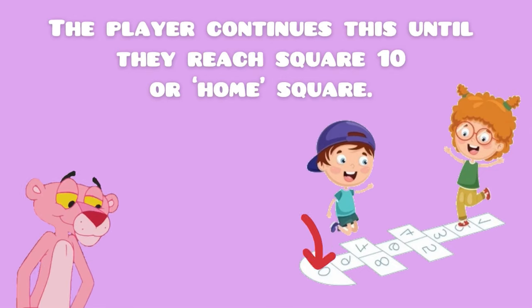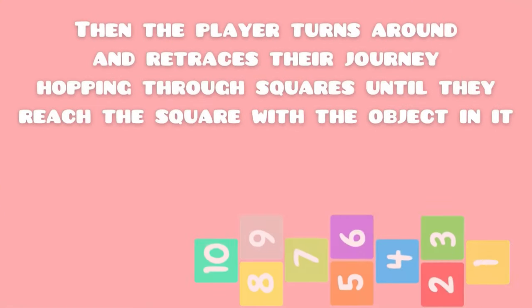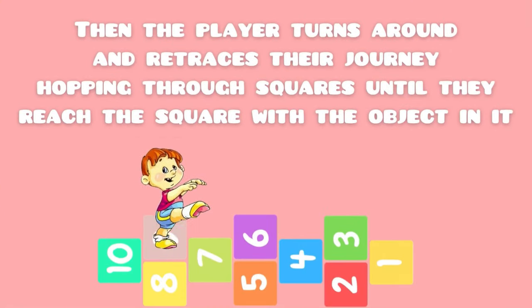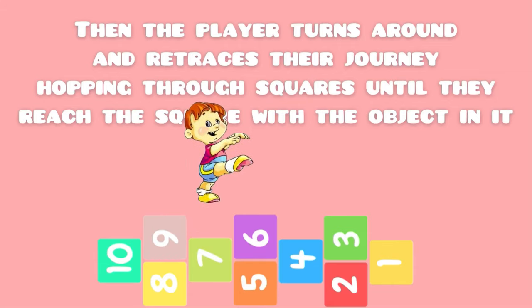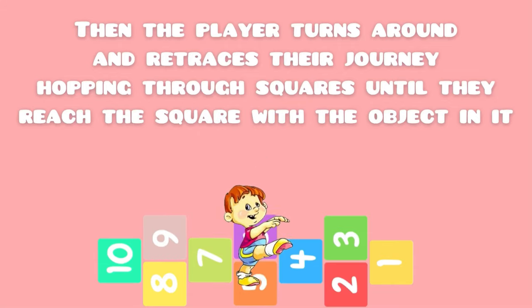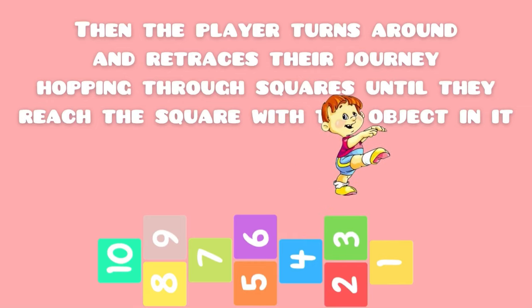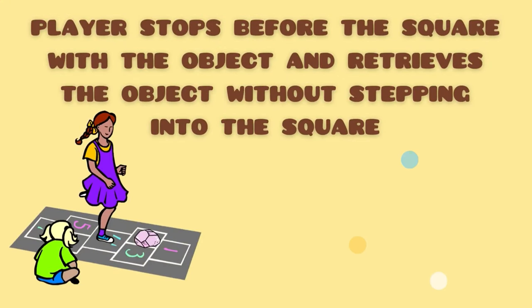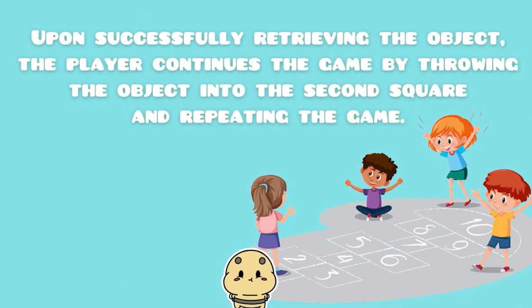The player continues this until they reach square 10, or the home square. Then the player turns around and retraces their journey, hopping through the squares until they reach the square with the object in it. The player stops before that square and retrieves the object without stepping into the square.